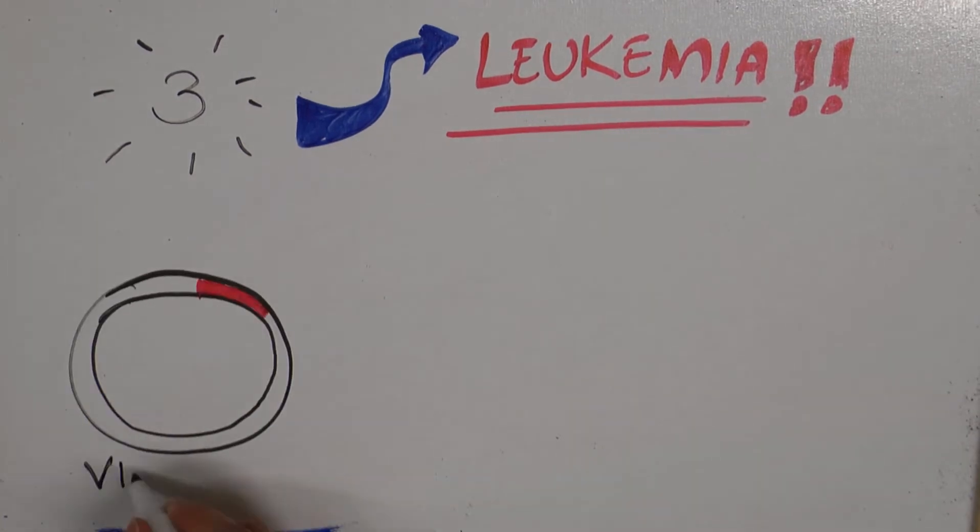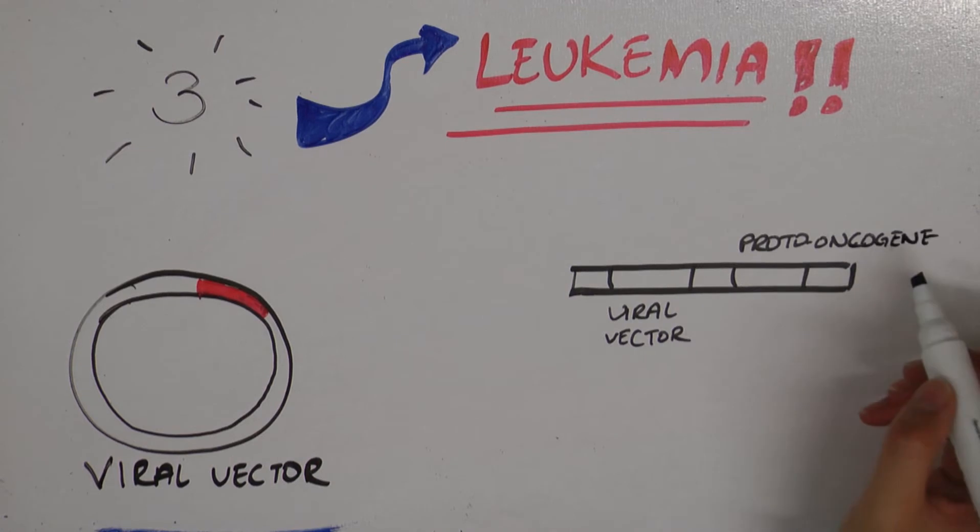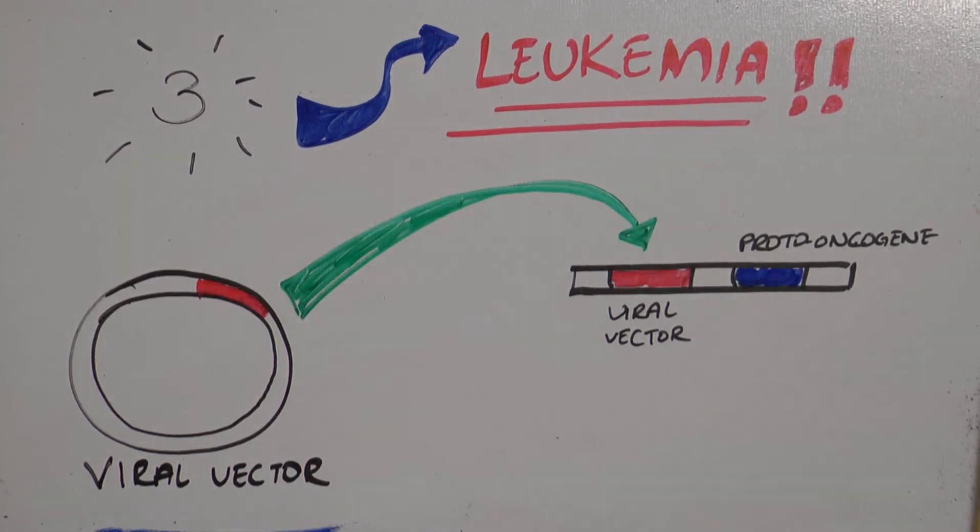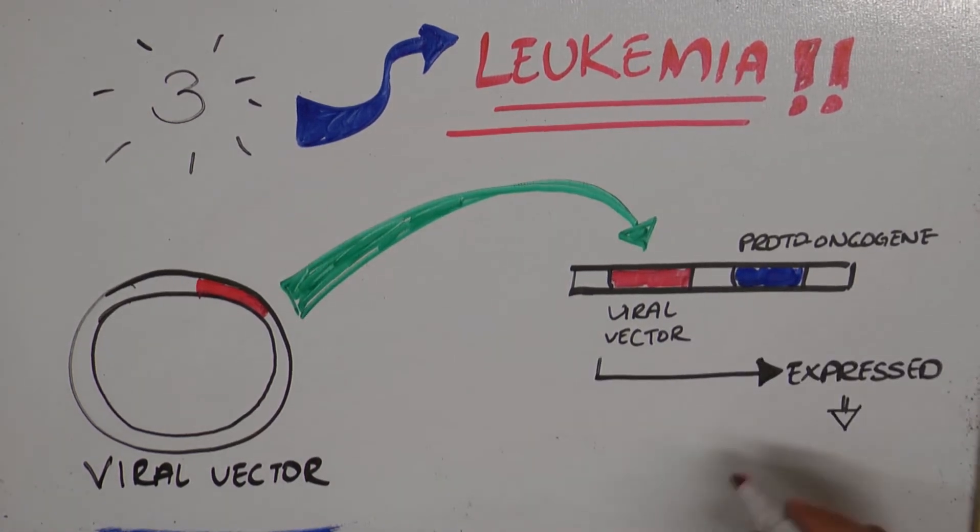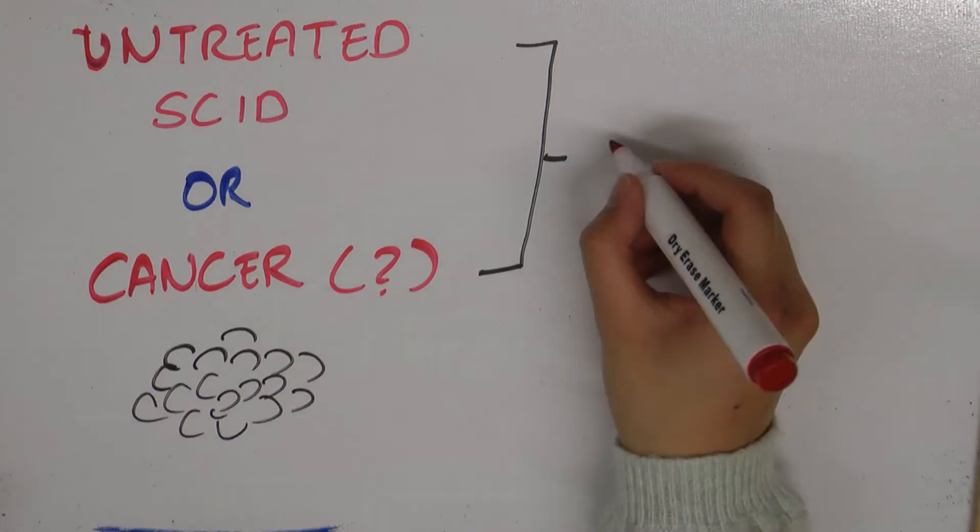This is the result of the viral vector being inserted into the host genome near a proto-oncogene. This raised the difficult choice between the child dying from untreated immunodeficiency and the possibility of death due to cancer.